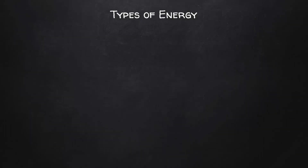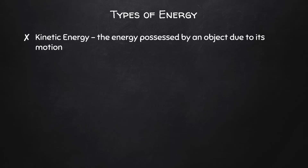There are many types of energy that we will learn about in physics. For this unit, we will focus on just three. The first is kinetic energy, which is the energy possessed by an object due to its motion. The equation for kinetic energy is ½ times the mass of the object times its velocity squared.